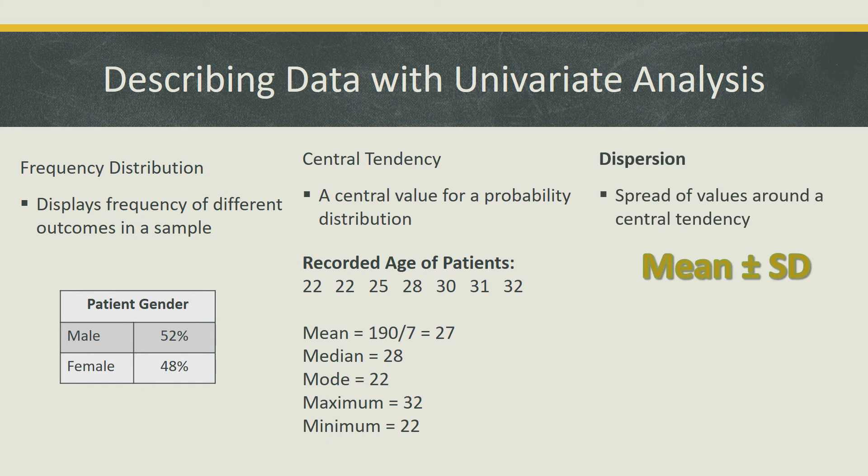The third category we focus on is dispersion, which is the spread of values around a central tendency. This shows how stretched or thin a distribution is. Some common examples of dispersion measures are variance, standard deviation, and range.